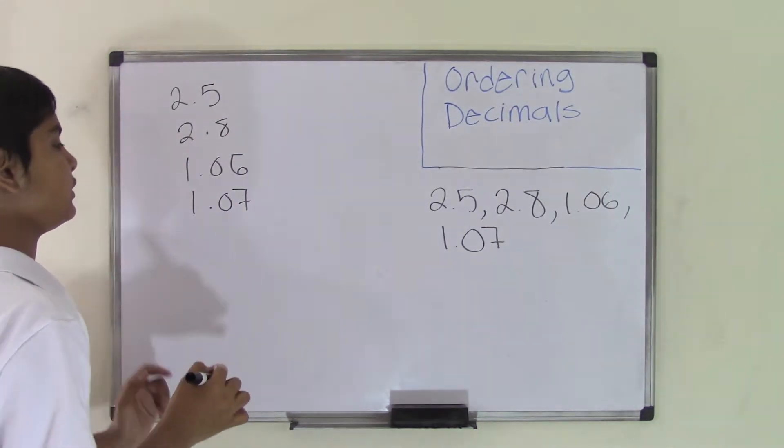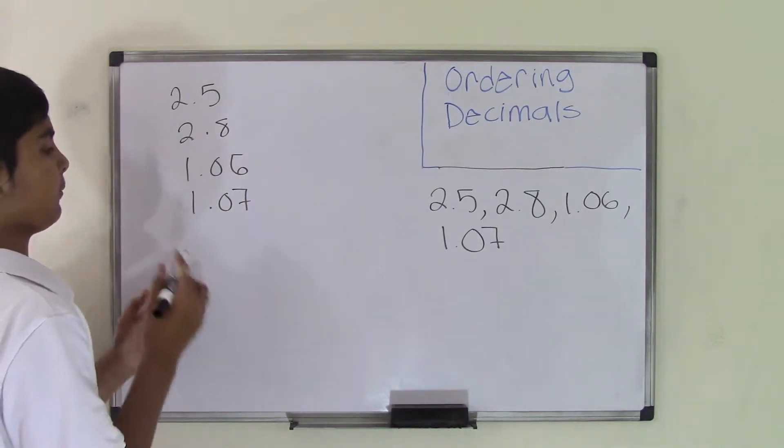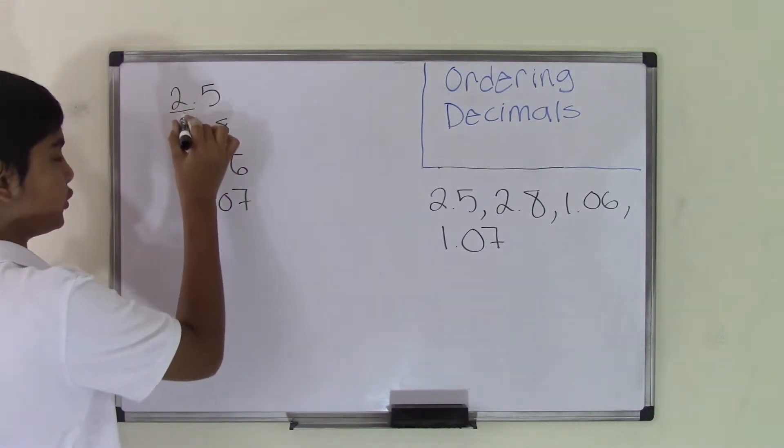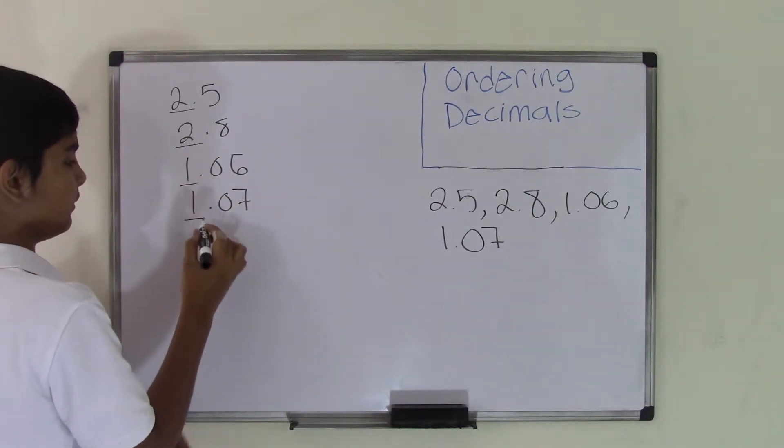Now what you need to do is identify all the whole numbers - the numbers before the decimal point. So in this case we have 2, 2, 1, and 1.